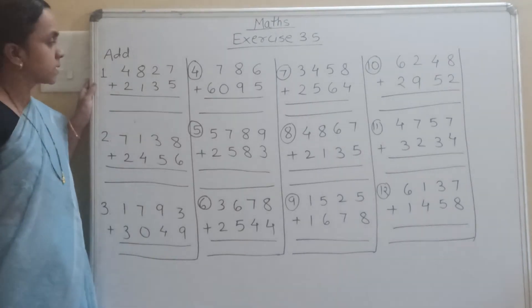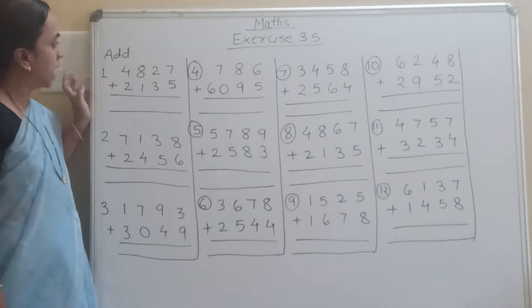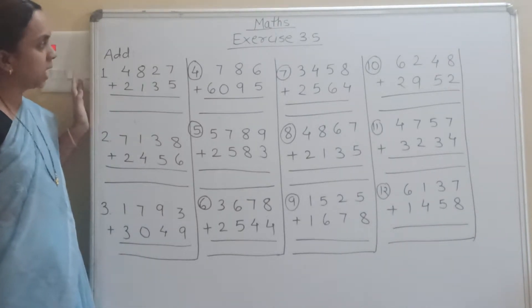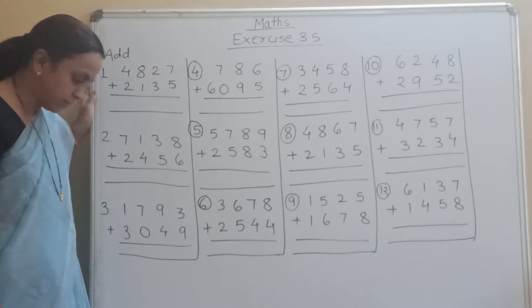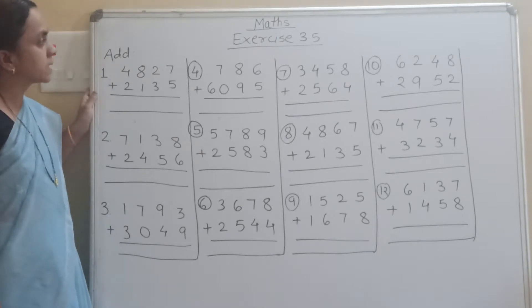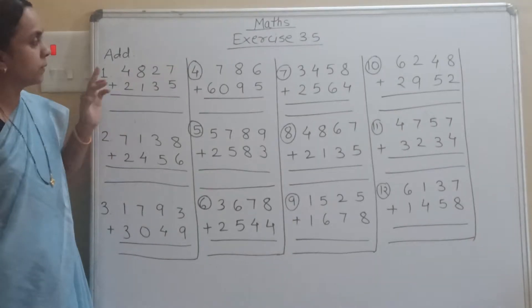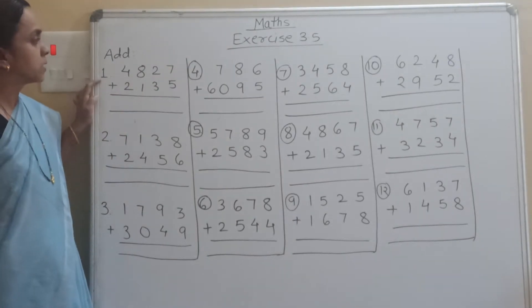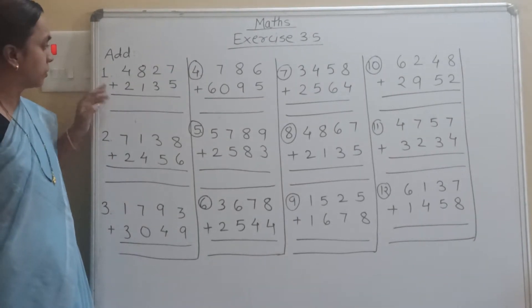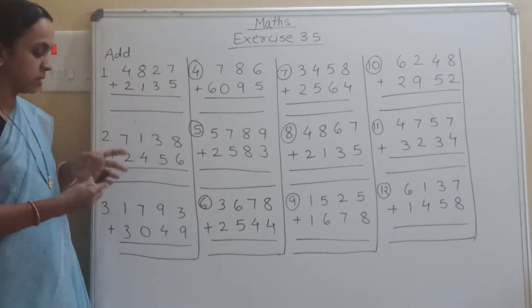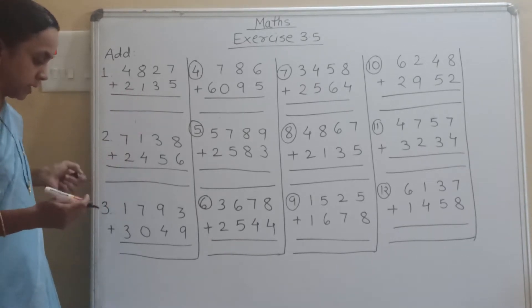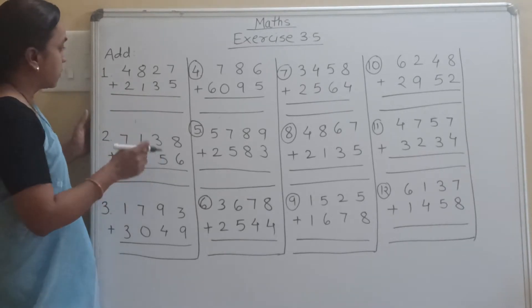Good morning students. Today we will see page number 45, exercise 3.5. Here we have to do 4-digit addition. We will see them one by one.